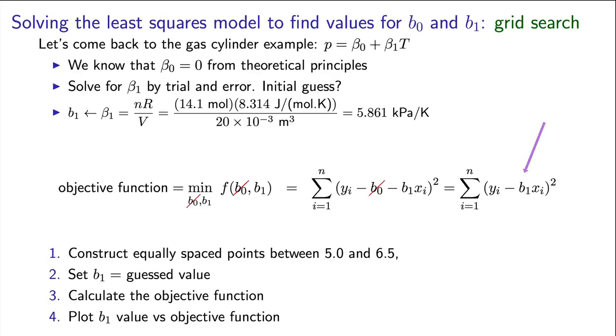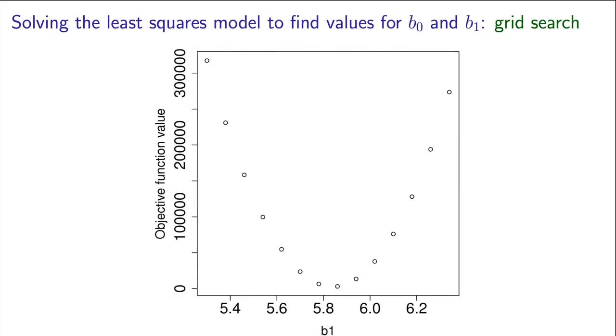Let's look at the value of that objective function as b1 changes on our evenly spaced grid. We will observe that as b1 starts out on the left with a low value of 5 and moves up, our sum of squares of errors starts to decrease.